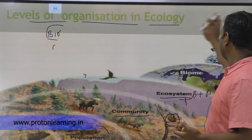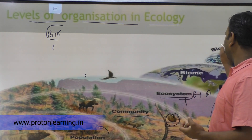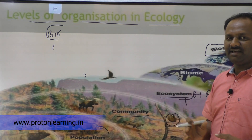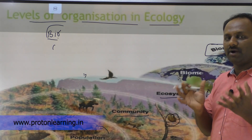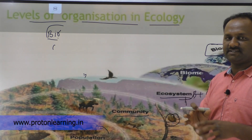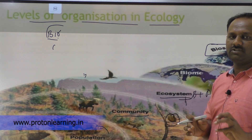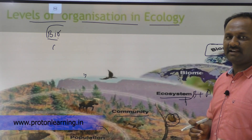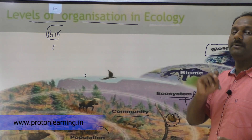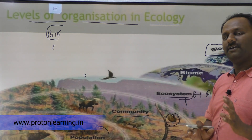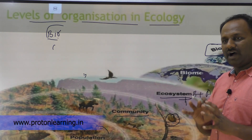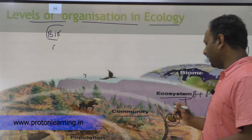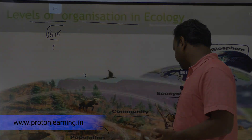Then, at the last part, we call it the biosphere. On Earth, the three spheres — hydrosphere, atmosphere, and lithosphere — interact, and there will be the possibility of life. So where there is the possibility of life, that sphere is called the biosphere.